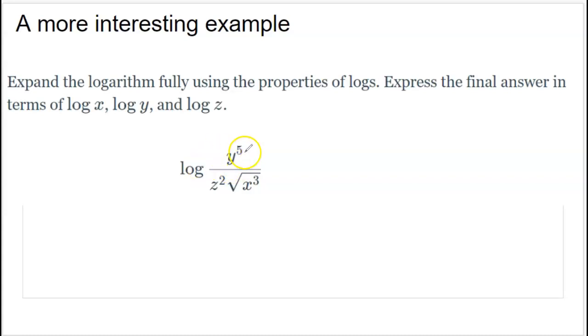Now, y to the fifth power is on the top, so I'm going to have a plus, I don't really care. Log of y to the fifth power. Z squared is in the denominator, meaning it has a negative exponent, so I'm going to do minus log of z squared, and that is in the denominator as well, so minus log of square root of x cubed. So that's the first step.